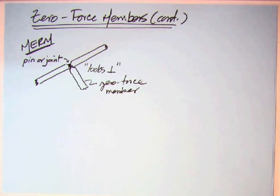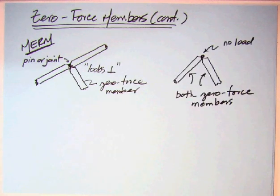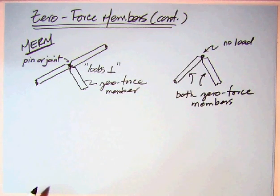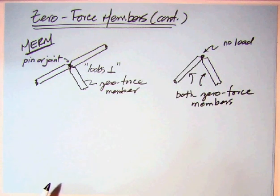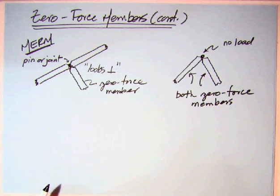Also in the MERM is a picture showing just two members — that's a special case of the zero force member definition. If you have just two members coming together at a pin and there's no load there, then both members are zero force members. Again, those members cannot be taken out; they're there for stability of the truss or for future loadings. If they weren't needed, they wouldn't have been there in the first place.